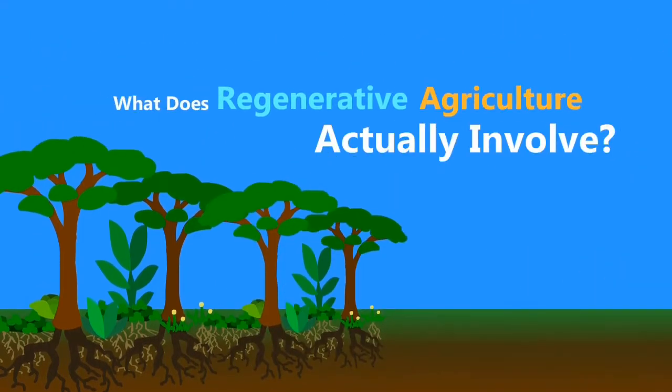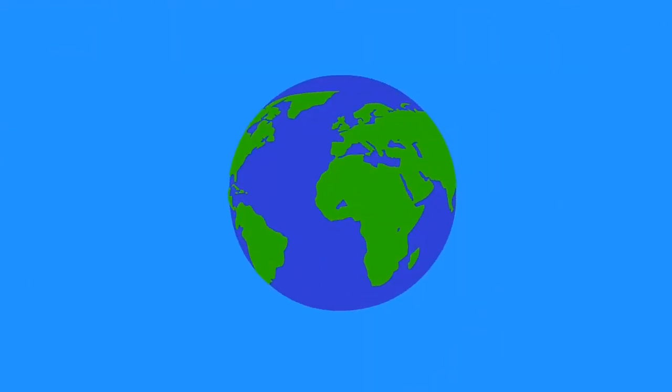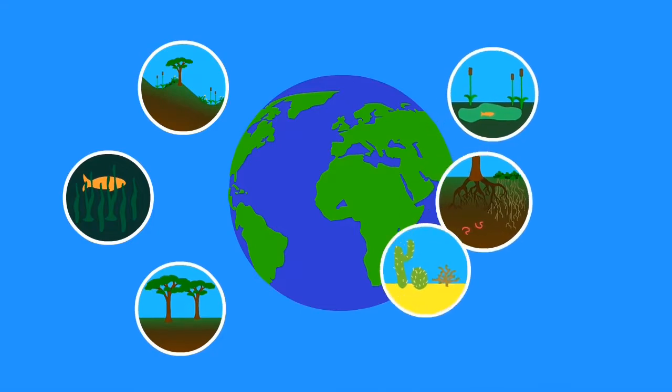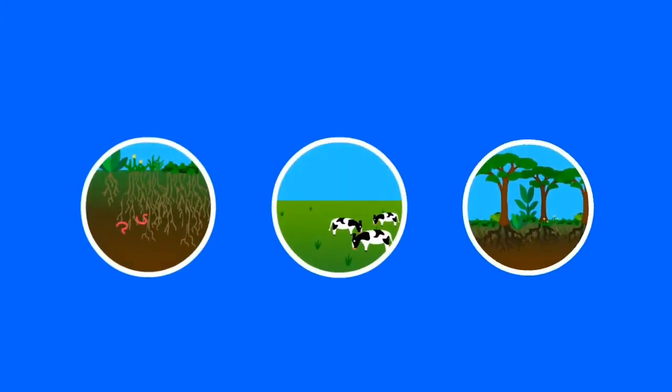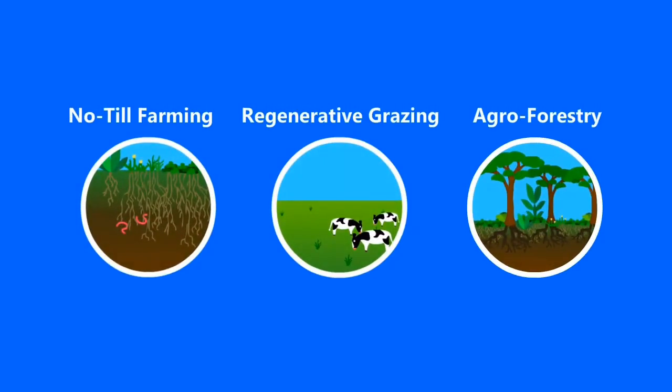So what does regenerative agriculture actually involve? Answering this question is actually pretty tricky, because the practices that work best largely depend on the land that's being worked with. So the variety of different practices border on infinity, a bit more than this video can cover. However, let's look at three common forms that regenerative agriculture can take.